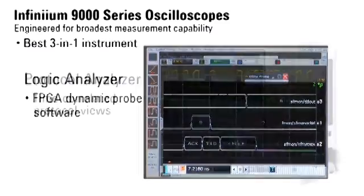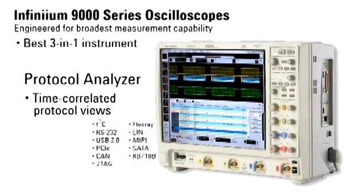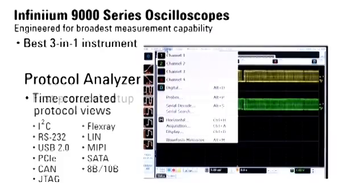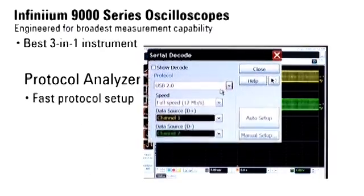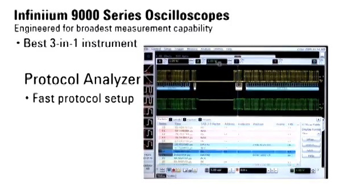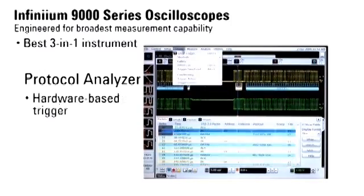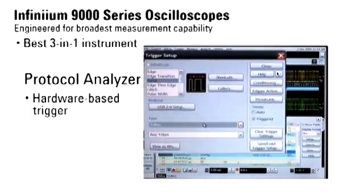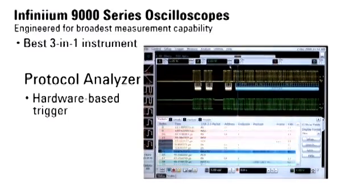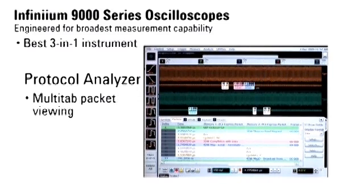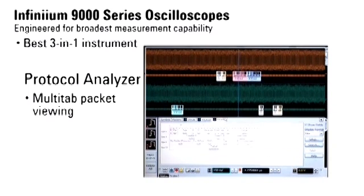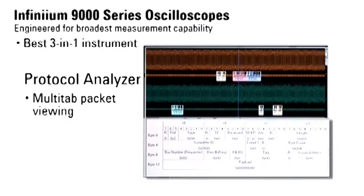If your design includes serial buses, you can quickly get time-correlated physical and protocol views without finding and hooking up a protocol analyzer. Shown here on a USB system, you can go from waveforms on screen to USB protocol display in just seconds with auto setup. Infiniium 9000 series scopes feature hardware-based protocol triggering, and you can quickly specify unique packet triggers with intuitive menu selections. In an industry first, these scopes include multi-tab protocol viewing to make it easy to see additional protocol information, such as the content of data packets shown here on a PCI Express bus.